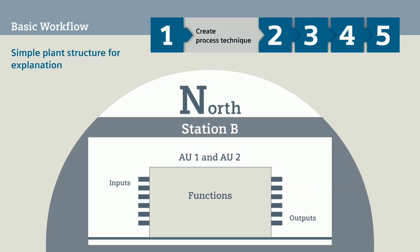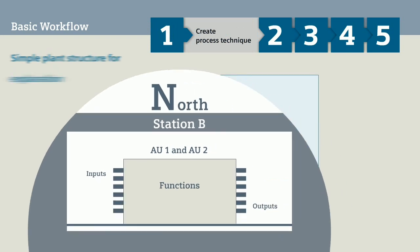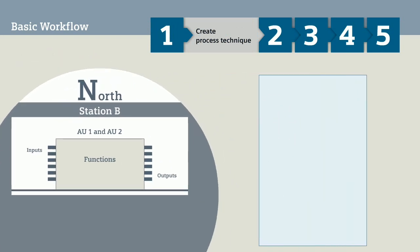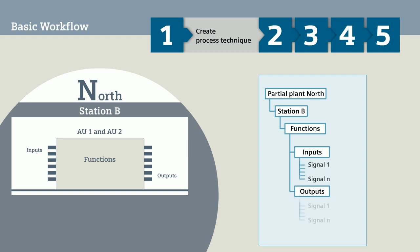In the first step of the basic workflow, you define the plant structure shown with hierarchically arranged levels. In OPM2, you create levels for the partial plant, the station, the functions, and the inputs and outputs with the relevant signals. In the everyday language of CCAM Toolbox 2, you create the process technique with this.